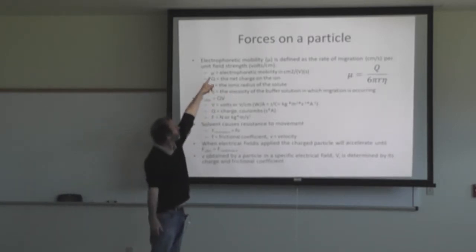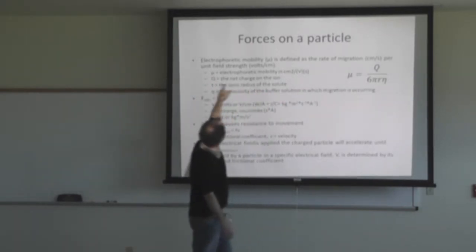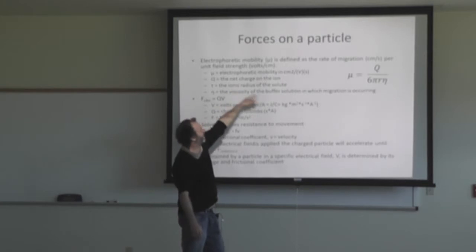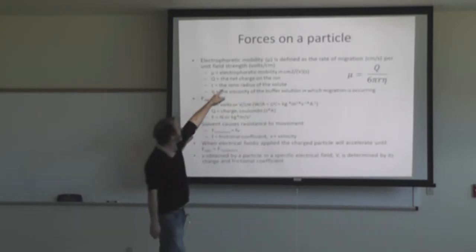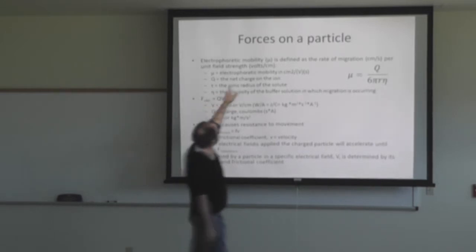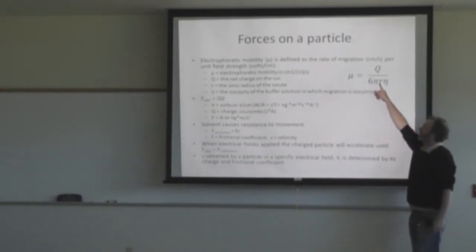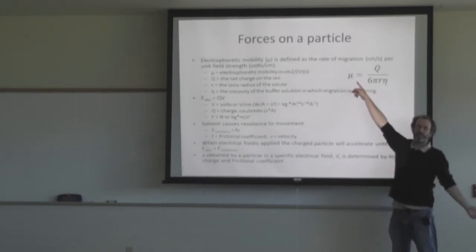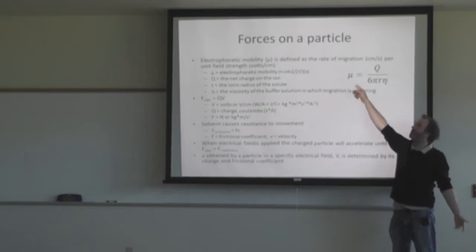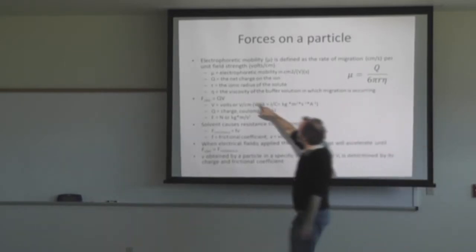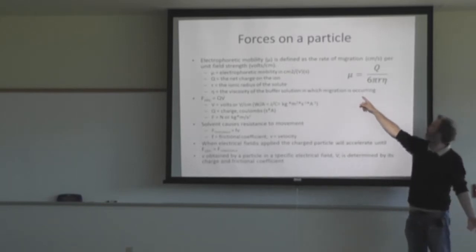The electrophoretic mobility equals the net charge of the ion, which is Q. R is going to be the ionic radius of the solute. So the smaller the radius, the higher the mobility; the larger the radius, the lower the mobility. Same thing with the viscosity of the buffer solution in which the migration is occurring — if you increase the viscosity, it slows things down.